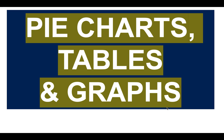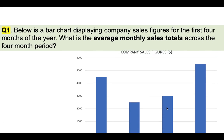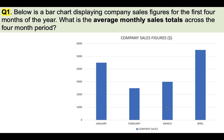OK, let's get into those pie charts, tables and graphs test questions. Question number one. I'm going to work through a question and then I'm going to get you to try one yourself under timed conditions. Question number one: below is a bar chart displaying company sales figures for the first four months of the year.